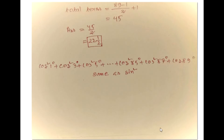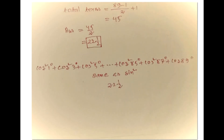Now if there is a series of cos, the rule will be the same as sin. So here a series of cos square 1 degree plus cos square 3 degree plus cos square 5 degree, plus dot dot plus cos square 85 degree plus cos square 87 degree plus cos square 89 degree. The rule will be the same and the answer will be the same: 22 and a half.